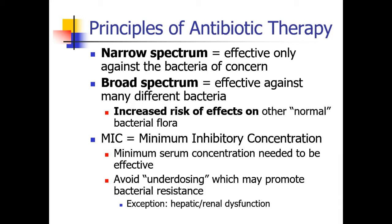One term you should be familiar with is the MIC, the Minimum Inhibitory Concentration. This is the minimum serum concentration that needs to be present in order for an antibiotic to be effective. When we underdose antibiotics, we have enough antibiotics that the bacteria can sense them, but not enough that they are killed by them, and this can actually promote bacterial resistance. On the other hand, patients who have hepatic or renal dysfunction may do fine with a lower dose, because lower doses will lead to an adequate serum level and will achieve the minimum inhibitory concentration.